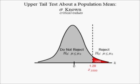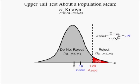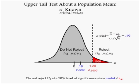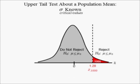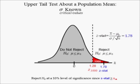Suppose instead the data yields a Z-stat equal to 0.19. Now, we cannot reject the null hypothesis at a 10% level of significance since the Z-stat is less than the critical value in an upper tail test. Suppose instead the data yields a Z-stat equal to 1.78. Now, we can reject the null hypothesis at a 10% level of significance since the Z-stat is greater than or equal to the critical value in an upper tail test.